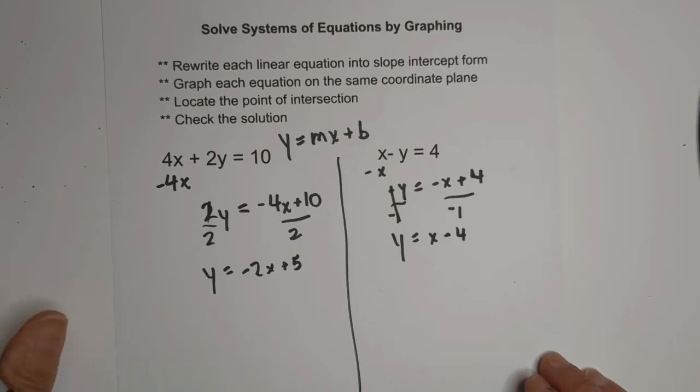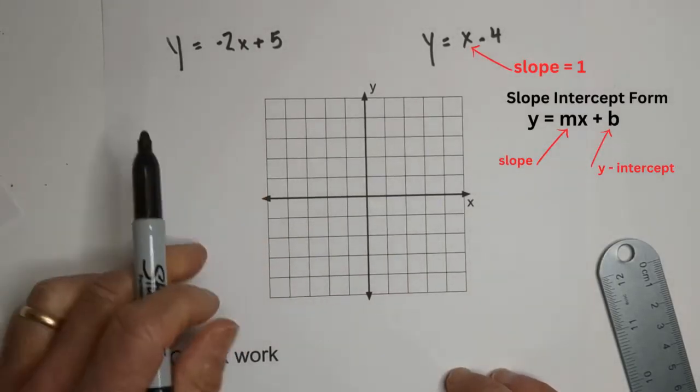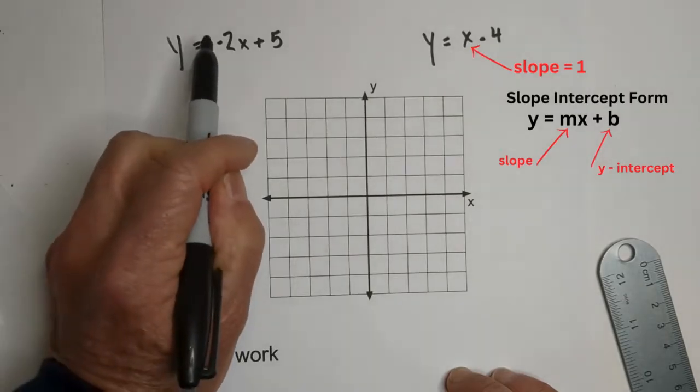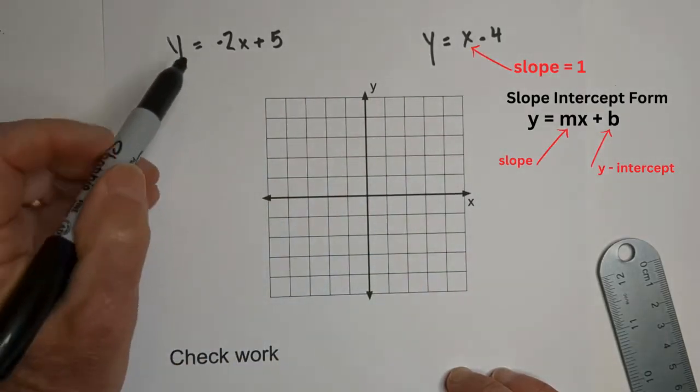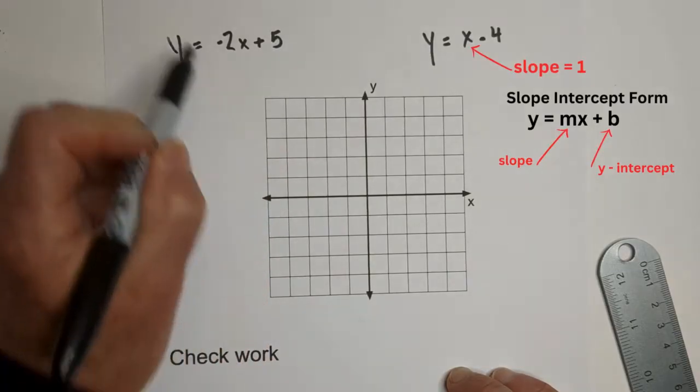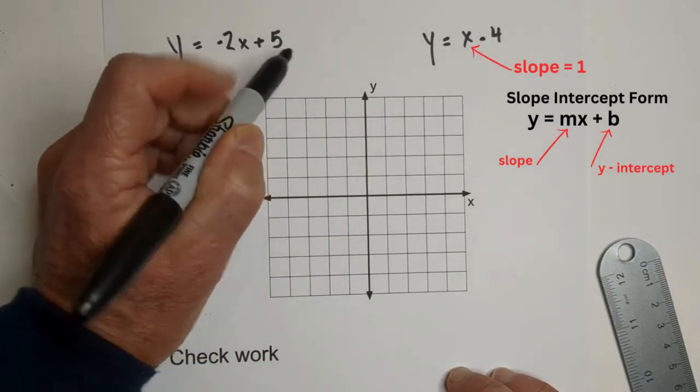Now what we need to do is graph them on the coordinate plane. Now that we have it in slope-intercept form, let's go ahead and graph it. We're going to graph both of them. So first, we have the slope here and the y-intercept here. So the first one, the y-intercept is 5.